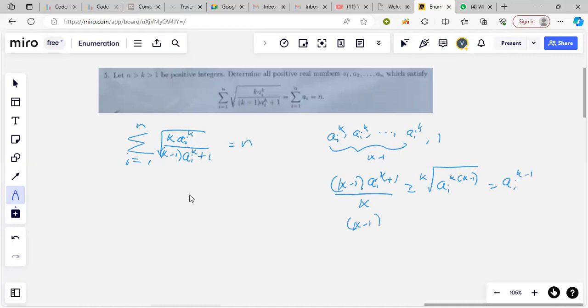So k minus 1, a i to the k plus 1, is at least k, a i to the k minus 1.